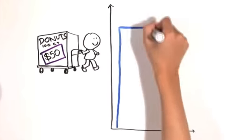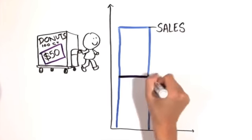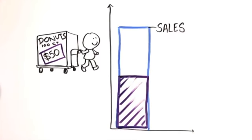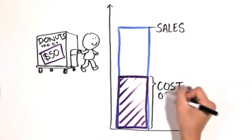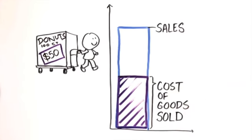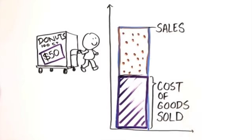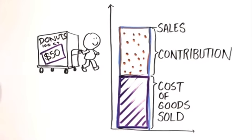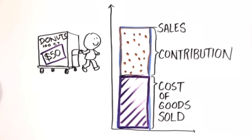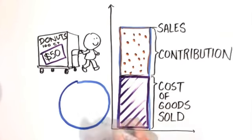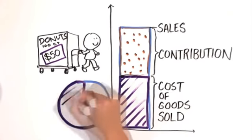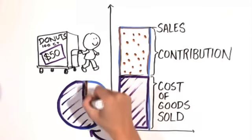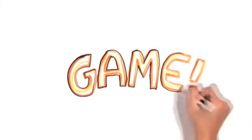The contribution — that is, the money contributed to keeping the store open — is what's left over after paying the cost of goods sold. This amount is really important to track, more important than your sales even, because it covers your fixed costs and keeps your doors open. You can calculate this as a certain number of cents for every dollar you sell, as a percentage, and we call that percentage your contribution margin.